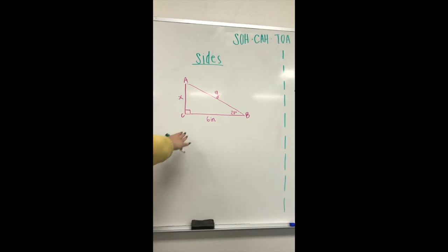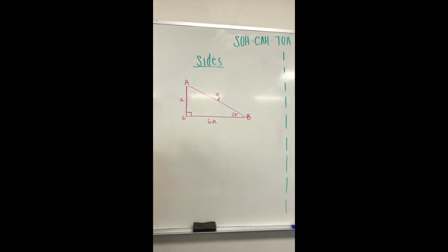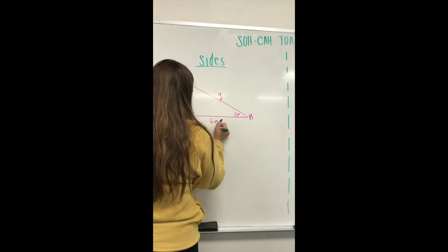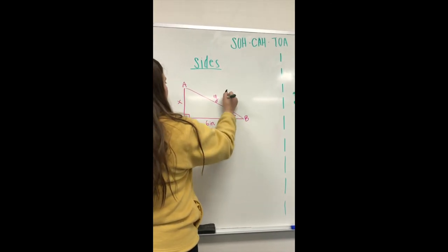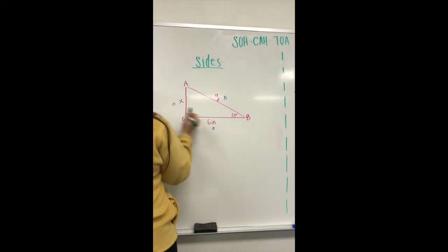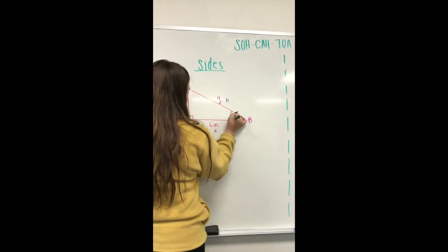This will be our next problem. We'll start with labeling our sides: A for adjacent, H for hypotenuse, and O for opposite. Then you identify the angle you'll be using.